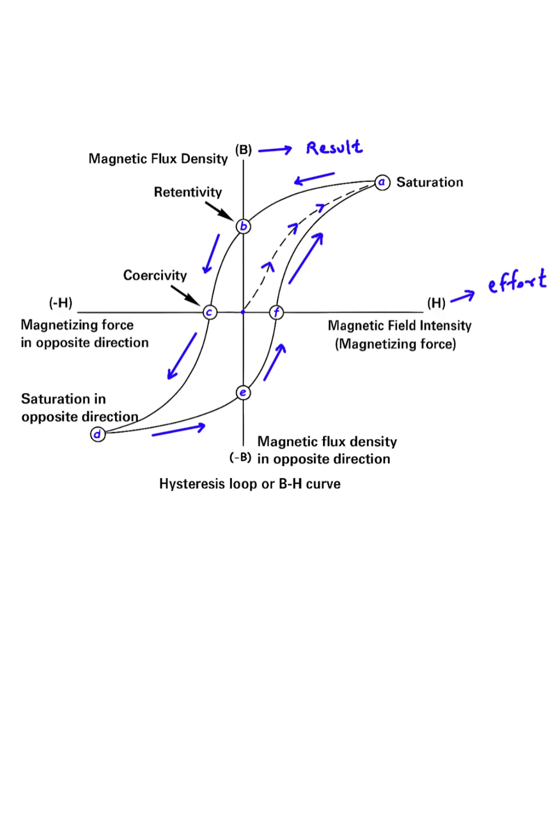If we continue applying this reverse effort, we'll eventually saturate the material in the opposite direction at point D. From here, the process repeats in reverse. As we reduce the reverse effort, the material holds on to some negative magnetism at point E.